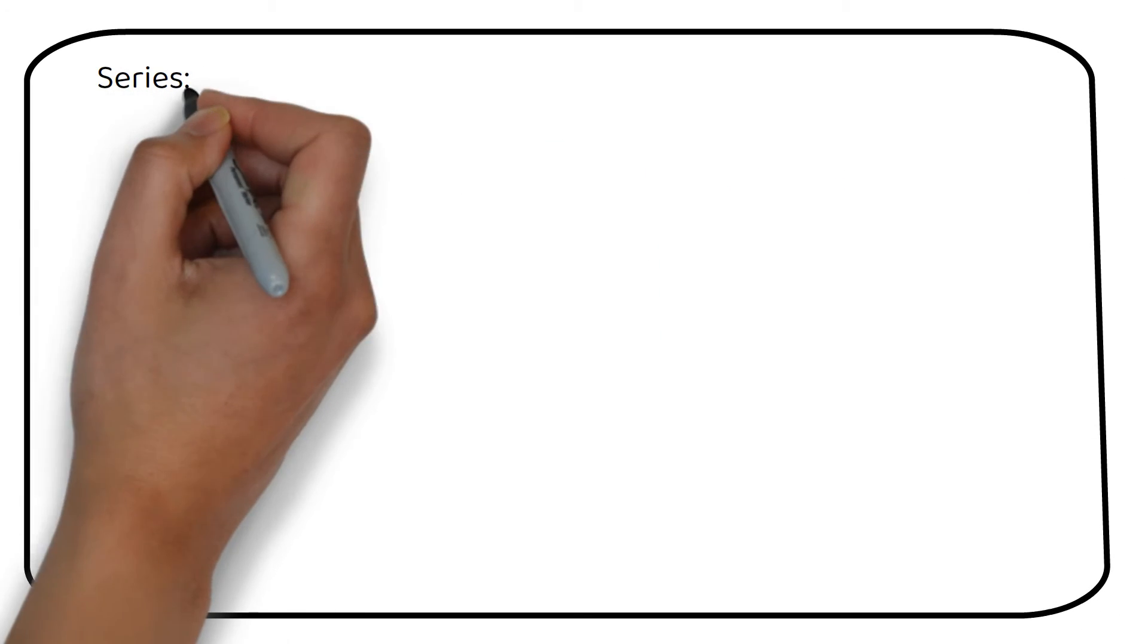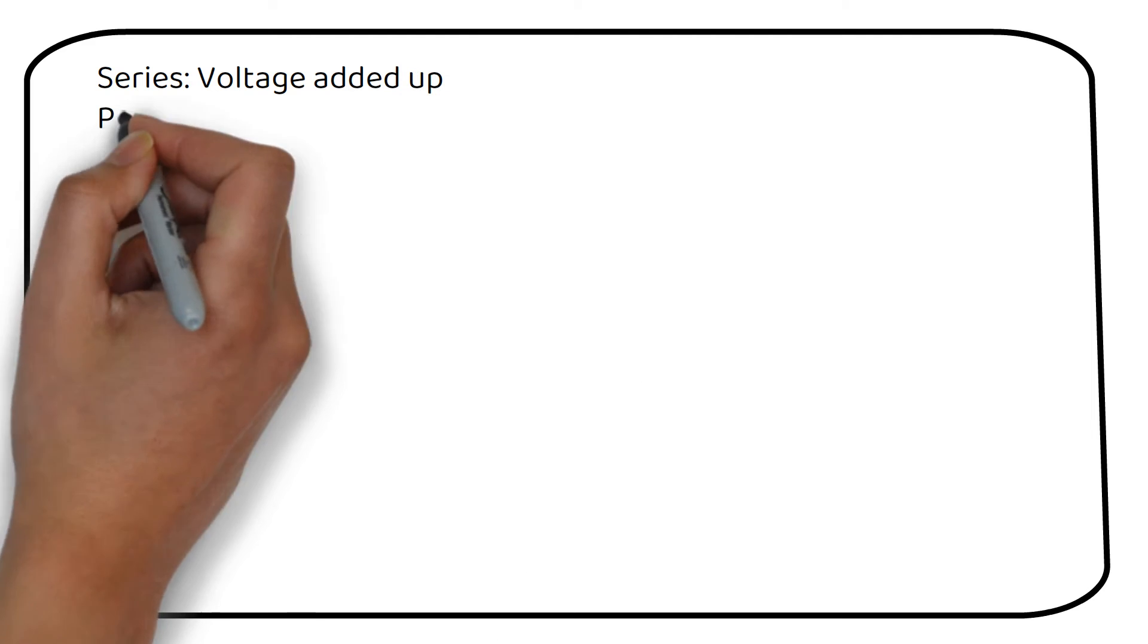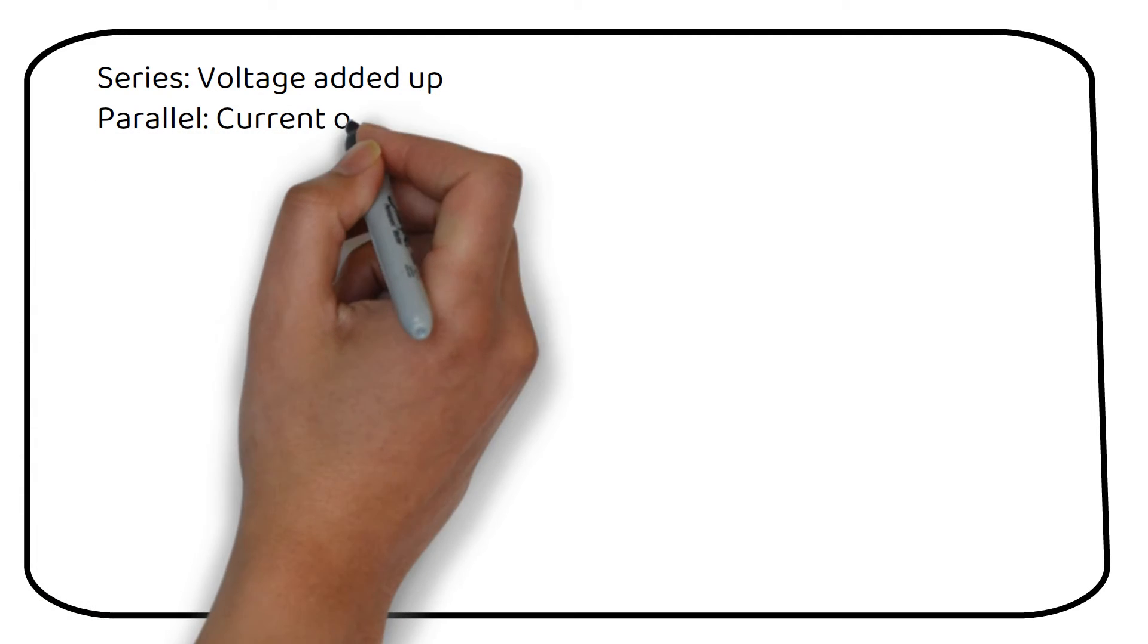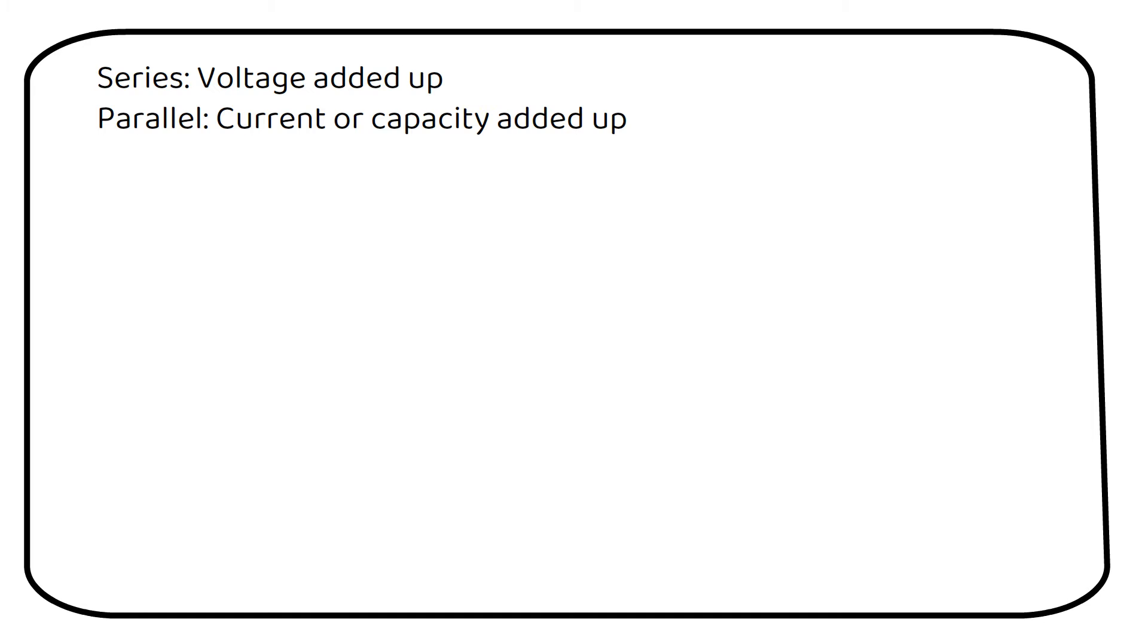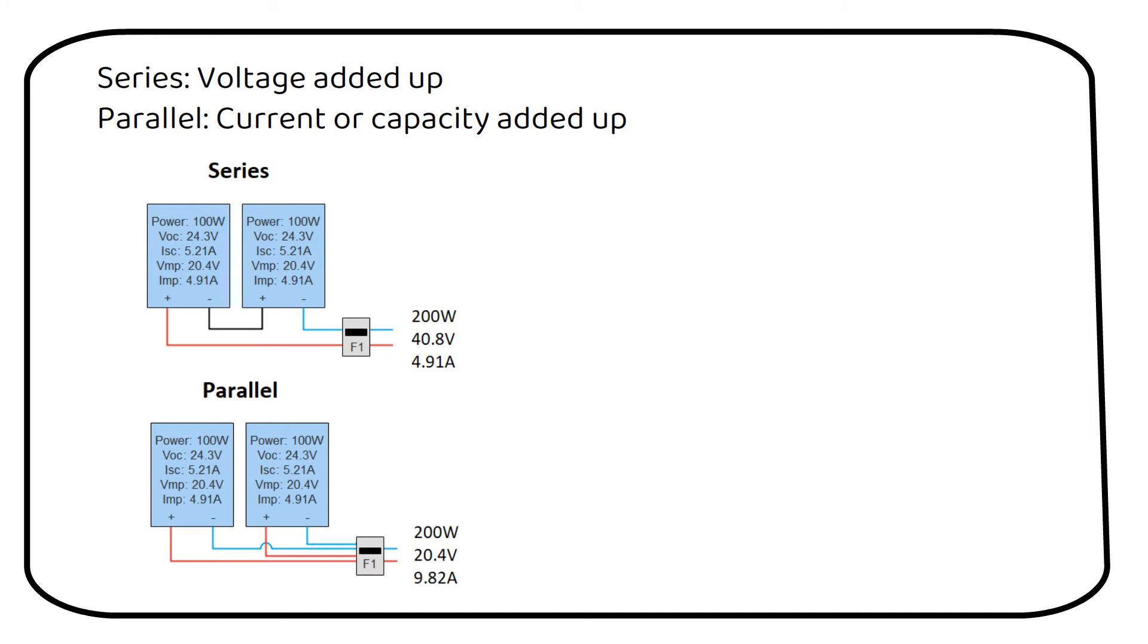In a series circuit, the voltage is added up, while in parallel circuit, the current or capacity is added up. A series circuit is where the solar panels or batteries are connected with the positive to the negative and so on. A parallel circuit is where all the positive and negatives are combined with each other.